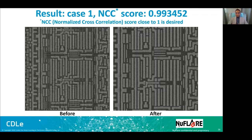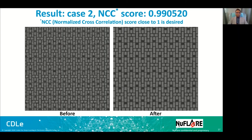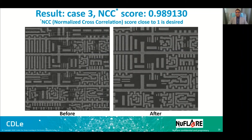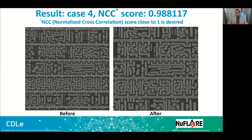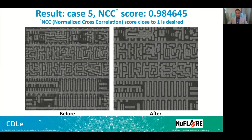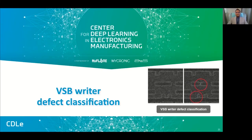We have multiple examples with different patterns where the NCC score is close to one. This tool also proved very interesting and promising, and in fact it was used to enhance our digital twin. With this I will go to my third and last tool in the toolset: the VSP mask writer defect classifier.